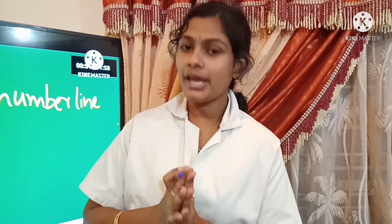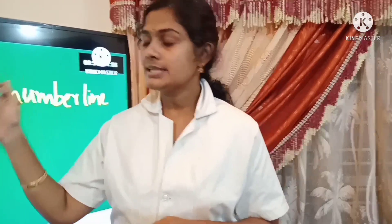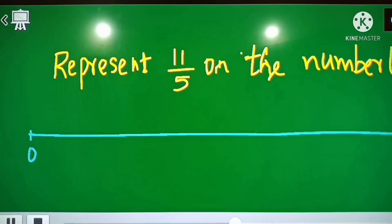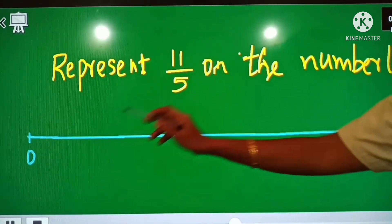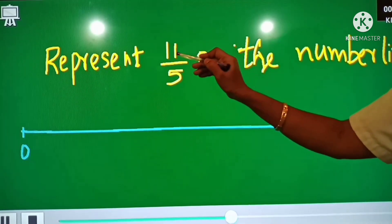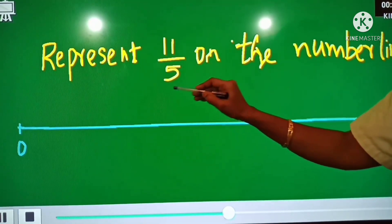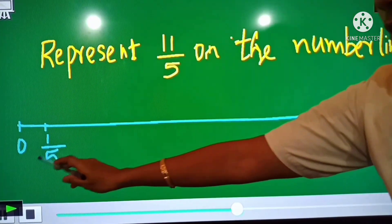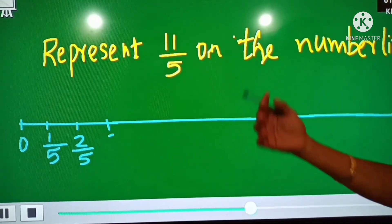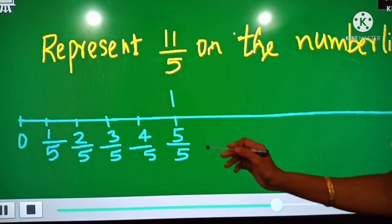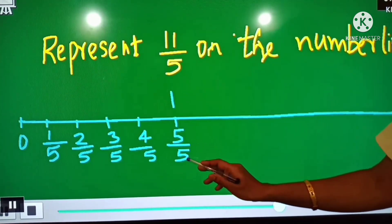We are going to do some examples. First question: represent 11 by 5 on the number line. Since this is a positive number, we start from 0. The denominator is 5, so we write 0, then 1 by 5, 2 by 5, 3 by 5, 4 by 5, and then 5 by 5 which equals 1. So between 0 and 1 there are 1 by 5, 2 by 5, 3 by 5, 4 by 5. We continue: 6 by 5, 7 by 5, 8 by 5, 9 by 5, 10 by 5 — which equals 2.